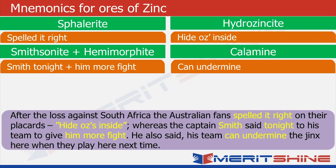Now with the story and associated words in mind, let us recall the names of ores. Spelled it right gives us sphalerite. Hide Aussies inside gives us hydrozincite. Smith tonight gives us smithsonite. Hemimorphite gives us hemimorphite. Can undermine gives us calamine — and zincs reminds us of the element zinc.